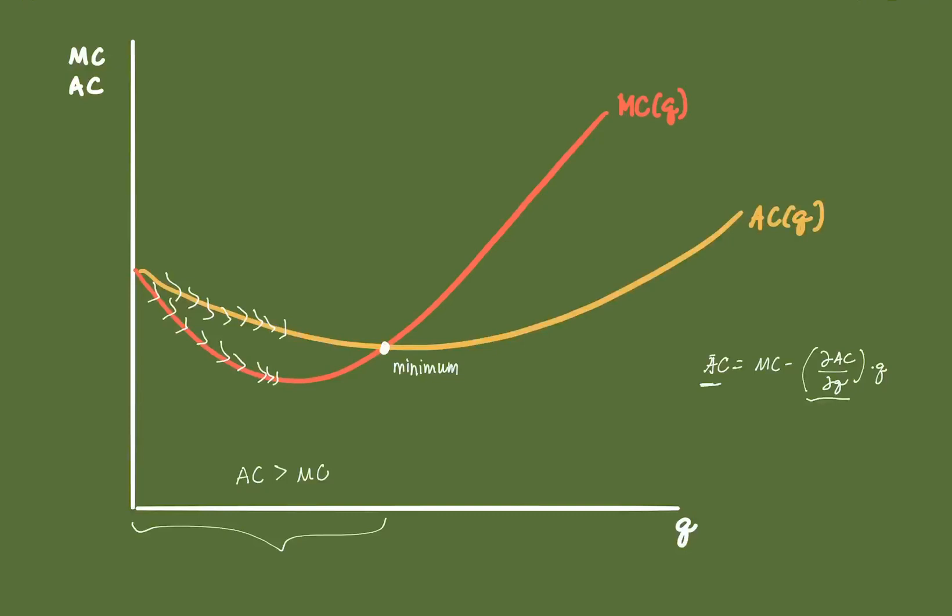If you notice, the slope of the curve here of AC is flatter than MC. Therefore, if the slope of AC is flatter, this suggests that AC is some function greater than MC. So we have that there.